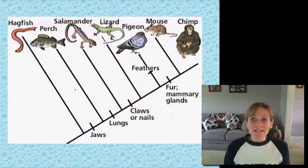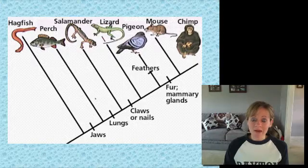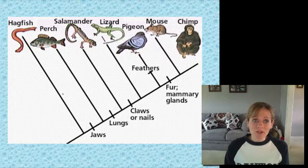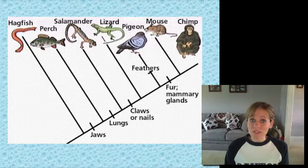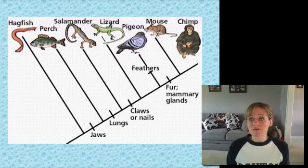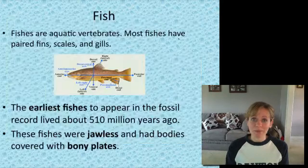Here is a cladogram of chordates. Down here we have our fish, which we'll learn about today. They evolved into amphibians, and we'll learn about those too. And then later on, reptiles and birds, and finally mammals.